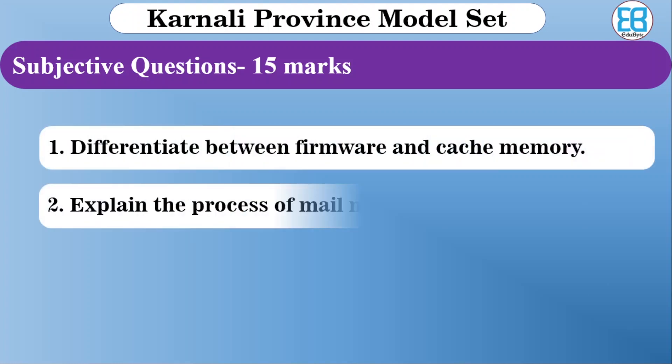RAM is software-related and cache memory is a type of memory — explain the difference. The second subjective question is: explain the process of mail merge with example. Go through the key steps of mail merge. The third question is: briefly explain the functions of an operating system.